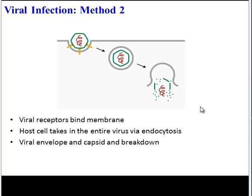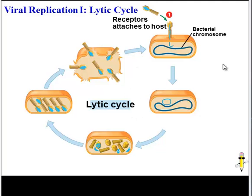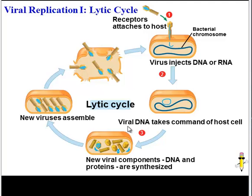So that's how a virus can infect a host cell. Now the virus will use the host cell to replicate, and there are a couple of different strategies it might use. The first strategy is the lytic cycle. With the lytic cycle, the virus receptors attach to the host cell, and then the DNA or RNA is injected into the host cell. That viral DNA takes over the host cell and makes new viral components — new viral DNA, new proteins — using the host cell's materials. This is critical because a virus doesn't have many enzymes and it doesn't have any organelles like ribosomes to make its own materials.